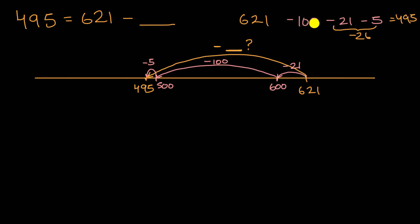And so I subtract 126. So I subtracted a total of 126. So 495 is equal to 621 minus 126.